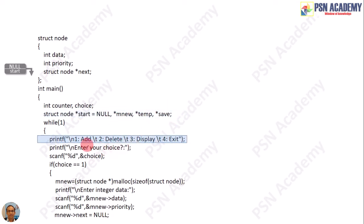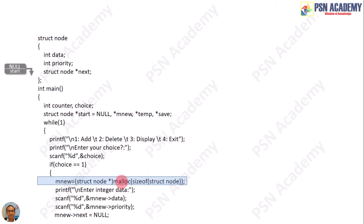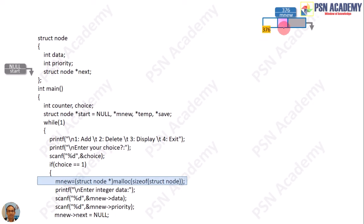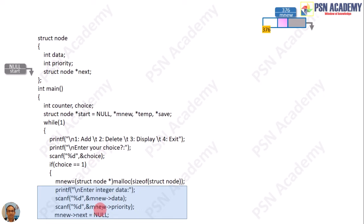We print: 1 for add, 2 for delete, 3 for display, and 4 for exit. You get the choice, and if the user gives 1, that means the user wants to add an item into the list. So you write: mnew equals (struct node*) malloc(sizeof(struct node)). You can refer to the previous videos on linked list where the malloc function is explained. We have mnew somewhere at 376 — with no data, no priority, and no next pointer yet. So you enter the integer data into mnew->data, then enter mnew's priority, and set mnew's next pointer to null. Suppose the user has given 88 as the data, 2 as the priority, and null is the next pointer by default.